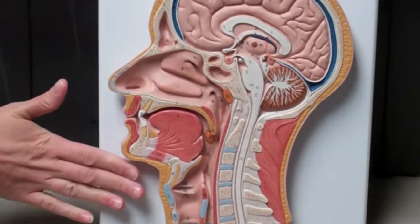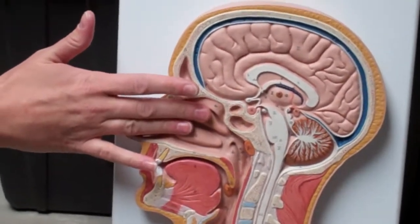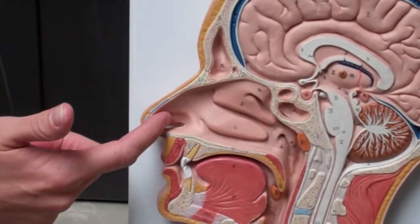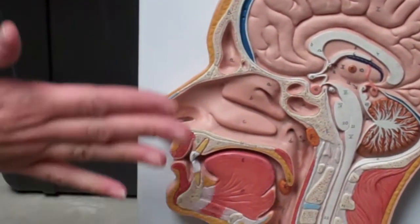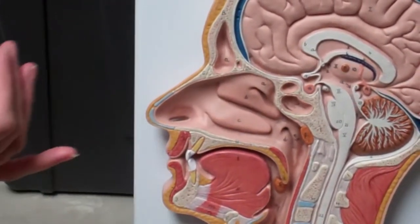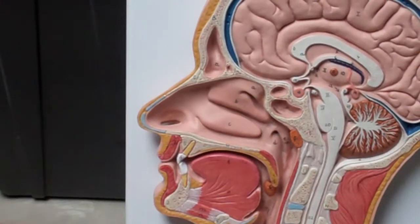So again, this is our model. Focus here on the nasal cavity, the vestibule, the space here behind it, external nares, the four borders—so top, bottom, front, back, so anterior, posterior, superior, inferior—and then your pharynx.